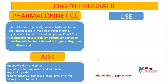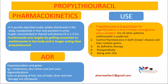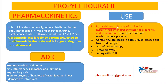Regarding uses: propylthiouracil is the drug of choice for treatment of hyperthyroidism during the first trimester of pregnancy and in lactation. In pregnant women, propylthiouracil is preferred; in other patients, methimazole is given. It can also be used to control thyrotoxicosis in both Graves disease and toxic nodular goiter.